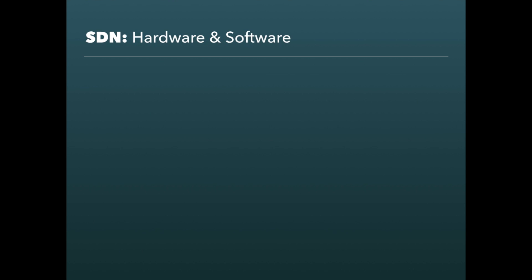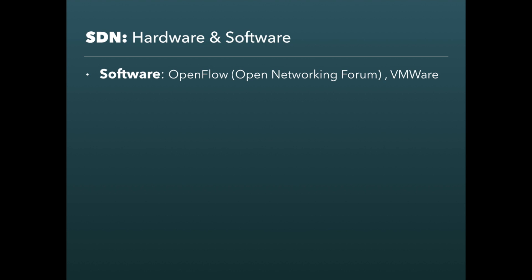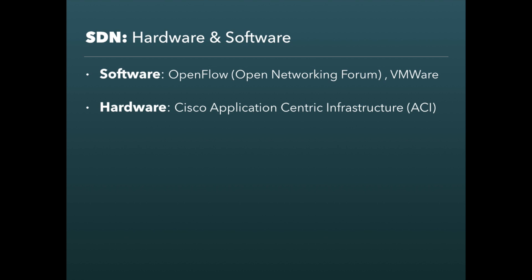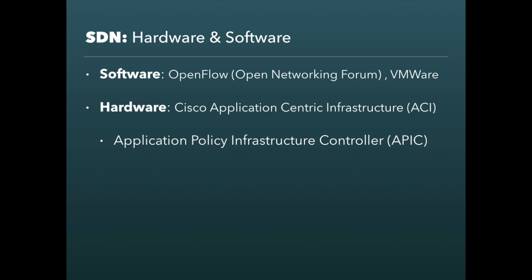SDN can be deployed as a software-based solution or as a hardware-based solution. SDN started off and is commonly referenced as a software solution using OpenFlow, which was defined by the Open Networking Forum with the goal of providing network programmability. VMware also supports a model of software-based SDN. The hardware-based option is Cisco's recommended approach, where hardware is more reliable and faster compared to a software-only solution. Cisco's SDN hardware option is part of an infrastructure called the Application-Centric Infrastructure, or ACI. ACI involves two main components: the SDN controller component called the Application Policy Infrastructure Controller, or APIC, and the SDN-enabled data center switches, which are the Cisco Nexus 9000 series switches aimed for very large data center networks.